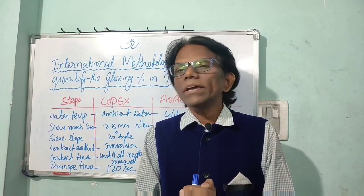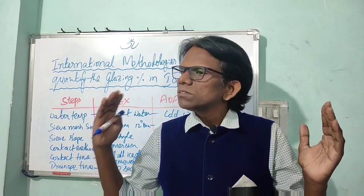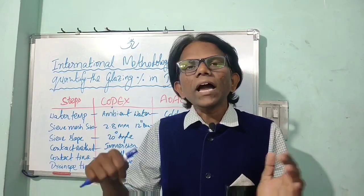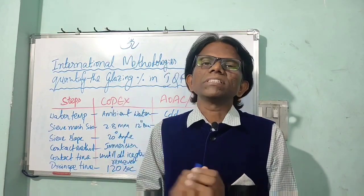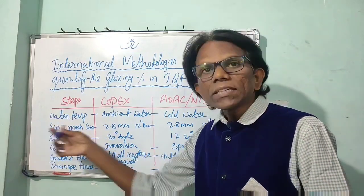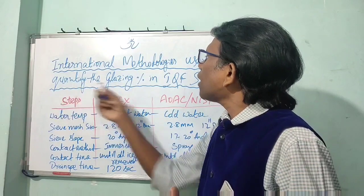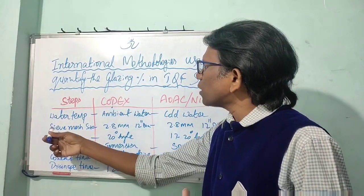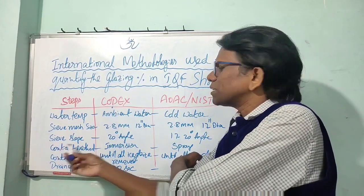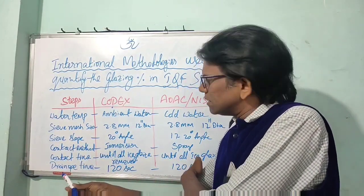For quantities below 1 lb of IQF frozen shrimps, an 8-inch mesh diameter is sufficient. For more than 1 lb — most people test at 2 lbs — a 12-inch diameter sieve is required. The key factors to quantify the glazing percentage are: water temperature, sieve mesh size, sieve slope angle, contact method, contact time, and drainage time.